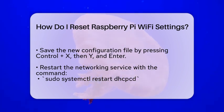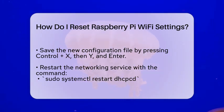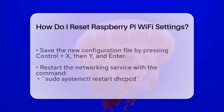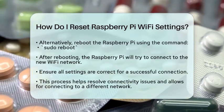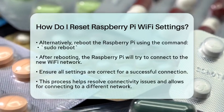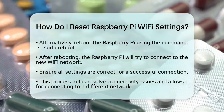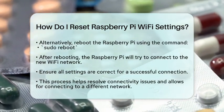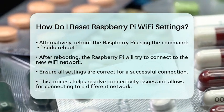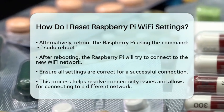Once you have saved the new configuration, you will need to restart the networking service to apply the changes. You can do this by entering the following command: sudo systemctl restart dhcpcd. Alternatively, you can reboot your Raspberry Pi by typing: sudo reboot.